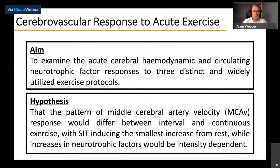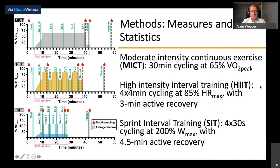We hypothesized that patterns in middle cerebral artery velocity (MCAv) would differ between conditions, with the smallest responses seen in the sprint interval training (SIT) condition, similar to those seen in the Kirtland study. We also wanted to examine neurotrophic factor responses that may drive neurovascular and cognitive benefits over a training period, as these haven't been studied in this context, and we believed they would be intensity dependent.